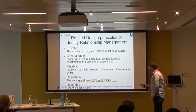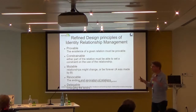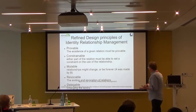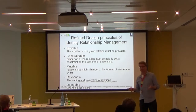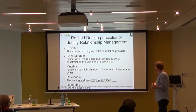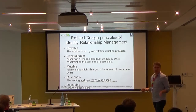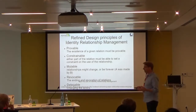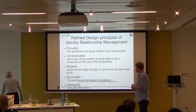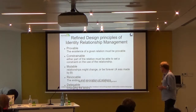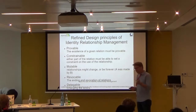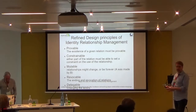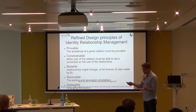Constrainable: either part of the relationship — so when we have two entities related — should be able to set a constraint on the users. Mutability: it might change, but we also might have a relationship which cannot change. An example is: A was made by B — that will never change. Revocable: regarding the ending of a relation, how to do that, what are the constraints of that, what needs to be taken into account. And delegable: the changing of the actors itself, either temporary, which is the delegation, or forever, which is really a move of the entity — we exchange one or maybe both of the relations.